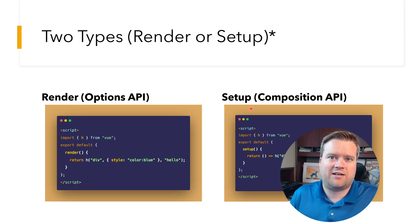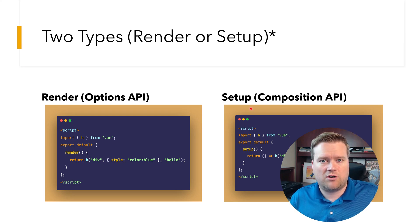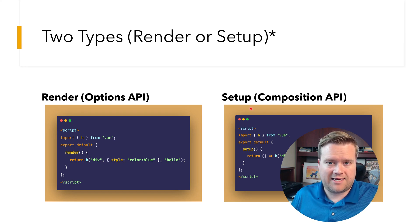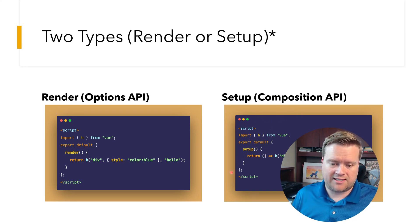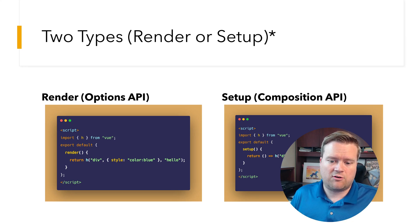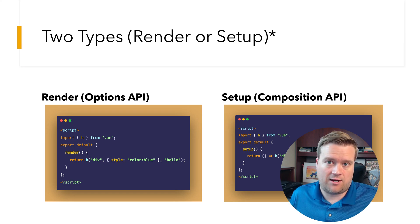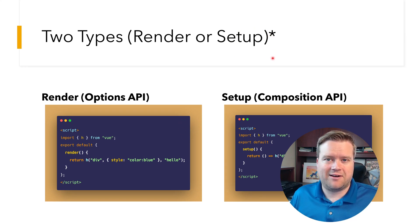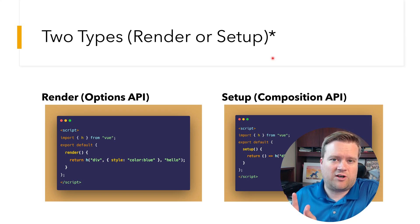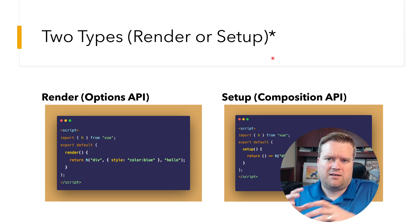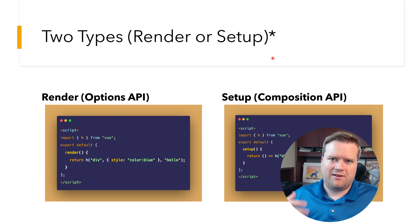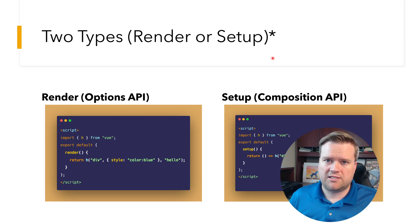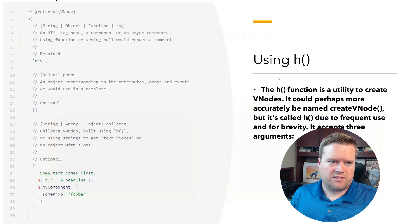There's also the Composition API approach. If you're using the Composition API, you have to return the render function as a function — that's what the right-hand side shows. Both examples essentially create an empty page with one div tag that says 'hello' in the color blue. There's also another way to return vnodes using functional components, which I'll show in a moment.